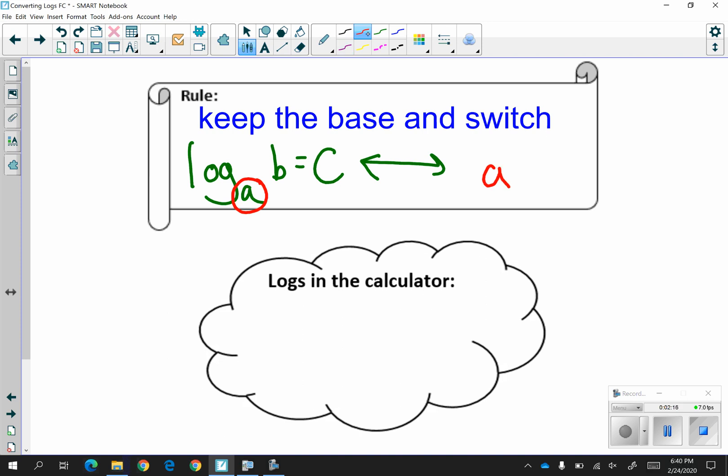And you're going to flip the other two values. That means the c on the right is going to become the c on the left. The b on the left is now going to go to the right of the equal sign. So all you have to do is keep the base and switch the other two values.